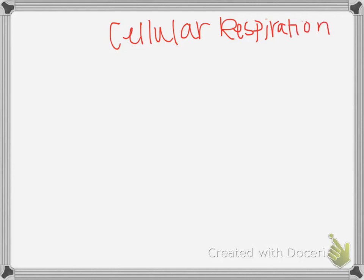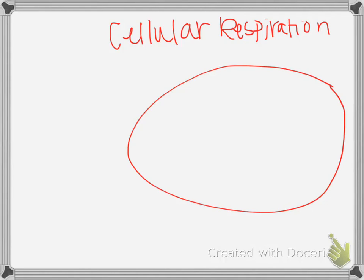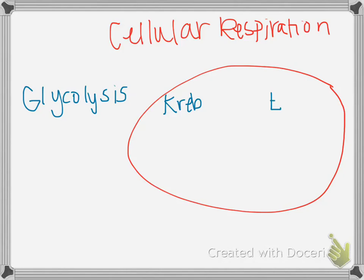Cellular respiration — the whole thing. Step one is glycolysis. Step two is the Krebs cycle. And step three is the electron transport chain. So you want to know that: glycolysis is the first step, the Krebs cycle is the second step, and the electron transport chain is the third step.